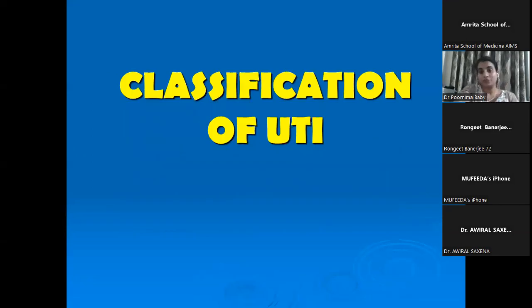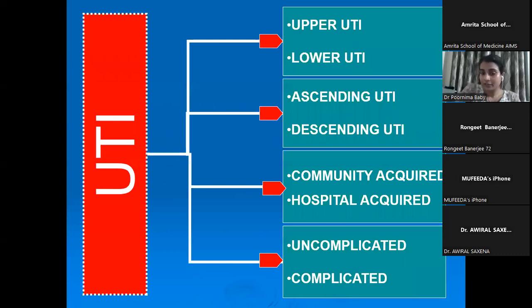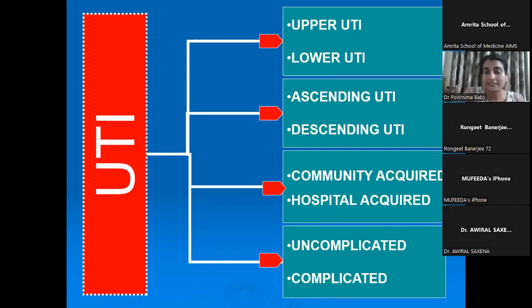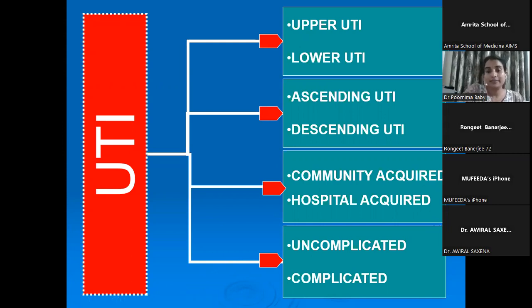How do we classify UTI? First is the anatomical classification — upper UTI and lower UTI. The bladder and urethra comprise the lower UTI. Then you have ascending UTI — from the rectal and perianal flora ascending upwards — and descending UTI, from a case of pyelonephritis coming down. And then you have community-acquired and hospital-acquired, and uncomplicated and complicated — when there are renal anomalies it becomes a complicated UTI.